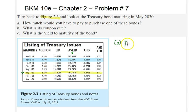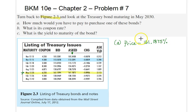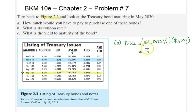So effectively the price that we would need to pay would be equal to 161.1875% of the face value — I assume $1,000 US dollars. As a result, multiplying these two numbers is quite straightforward: $1,611 dollars and 88 cents would be the purchase price of this bond.